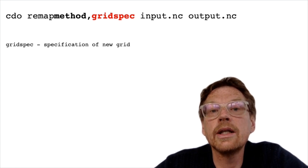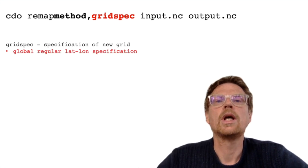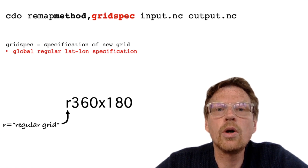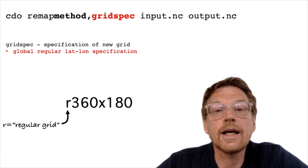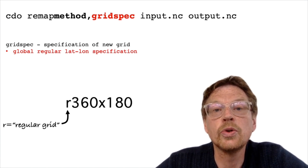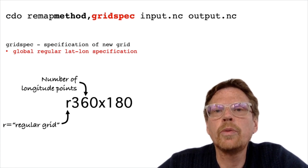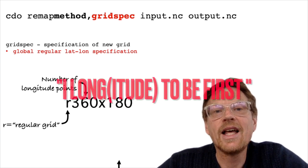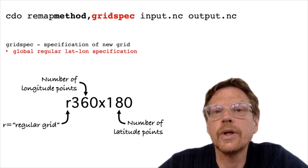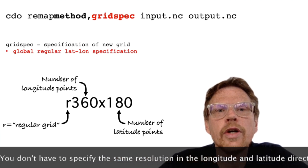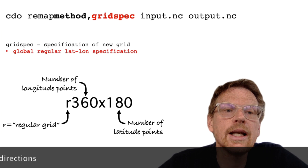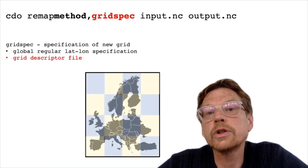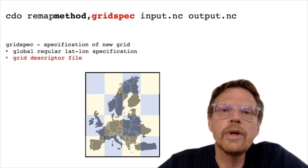CDO actually has three methodologies for specifying the grid resolution. The first is to specify a global latitude-longitude grid using a string format. First we have an r, which stands for a regular longitude-latitude grid. The 360 that comes next is the number of longitude points — remember with CDO, longitude always comes first. Then we have an x, and then the second number is the number of latitude points. Here we are specifying a grid resolution of one by one degree: 360 longitude points and 180 latitude points. But what if we don't want to remap to a global grid — maybe we only want to remap to a proportion of the globe, such as an area over Europe?